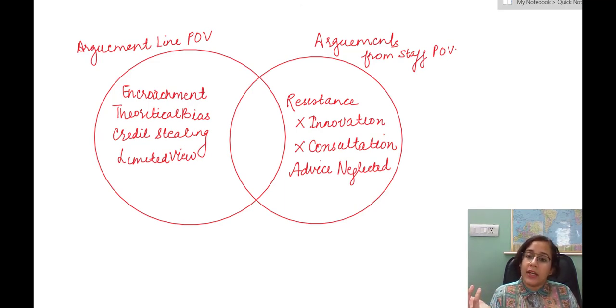Therefore, they have these ideas which cannot be actually implemented and if at all they are implemented, they are blamed of the credit that they are stealing from the line authority. They have a limited and narrow view. This is all what line authority says about the staff authority.